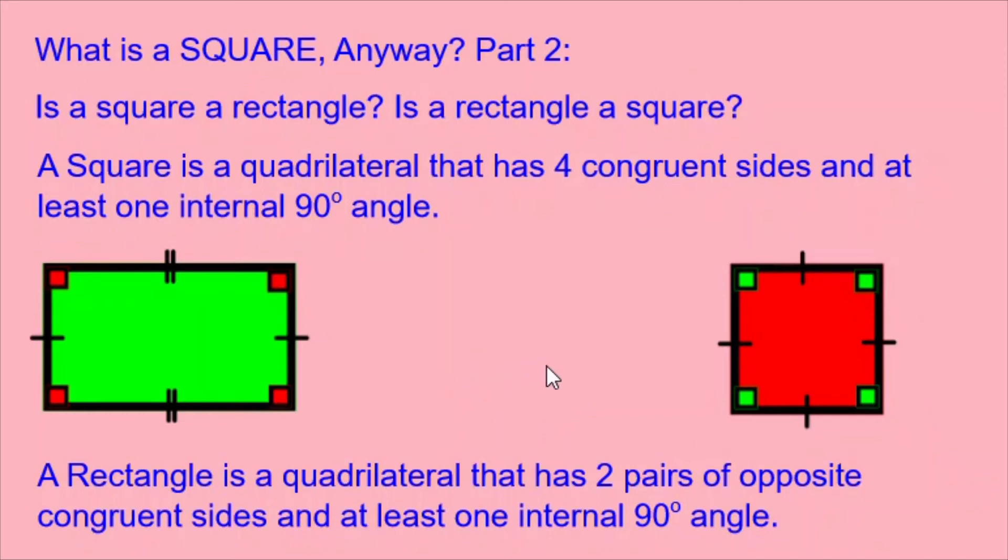A square, though, is a rectangle. Because a square has the at least one internal 90 degree angle. And yes, you can say it has two pairs of opposite congruent sides. Even though all four sides are congruent, we can still say that it has two pairs of opposite congruent sides.